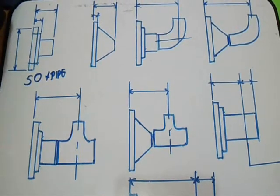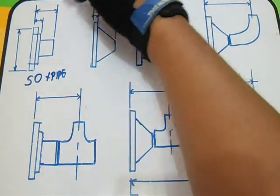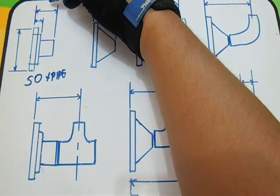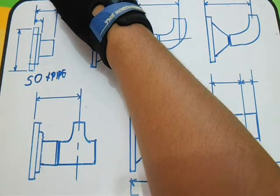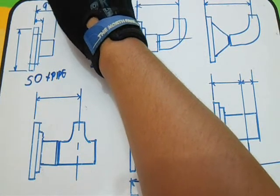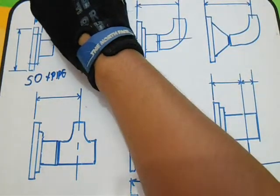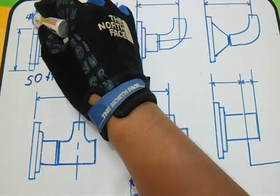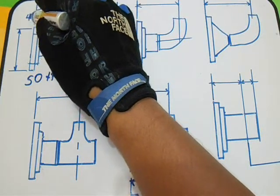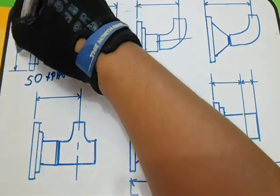For SO plus pipe (slip-on plus pipe), our dimension here is 91, and here is 44. This face of flange is 343.